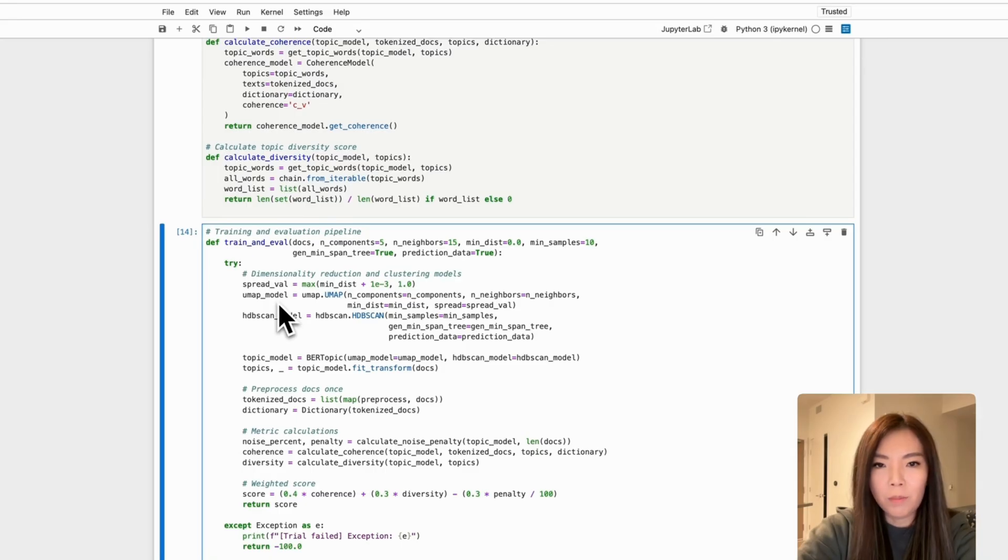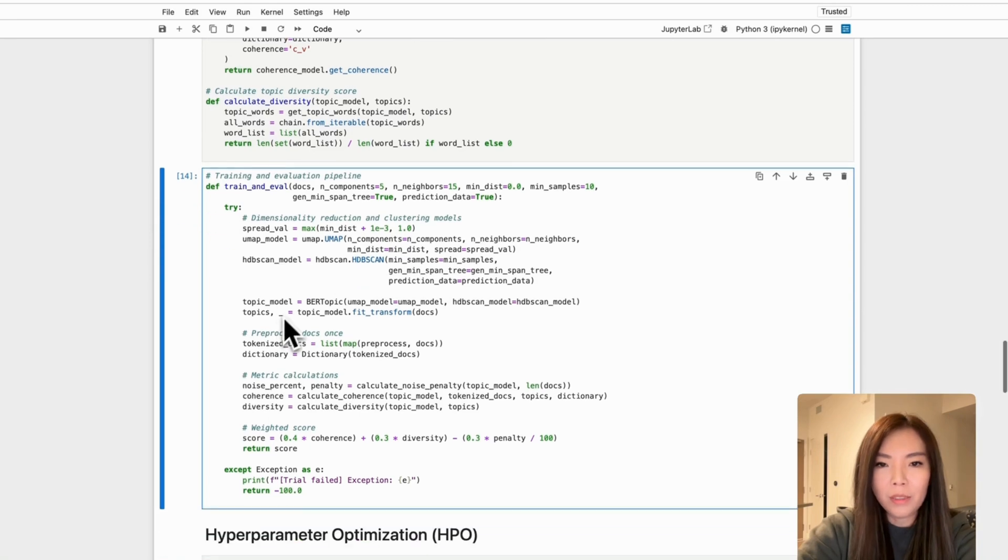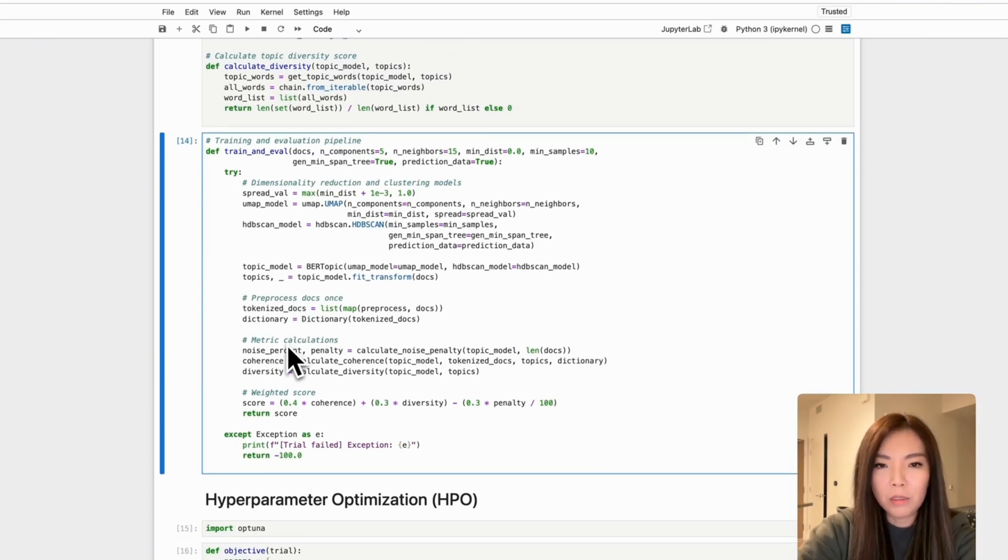Train_and_eval serves as the core of the pipeline, which will initialize UMAP and HDBSCAN with specified parameters to perform dimensionality reduction and clustering. It then feeds BERTopic to the provided documents, automatically generating topic assignments. Afterwards, the function calculates the three key evaluation metrics: coherence, diversity, and noise penalty.